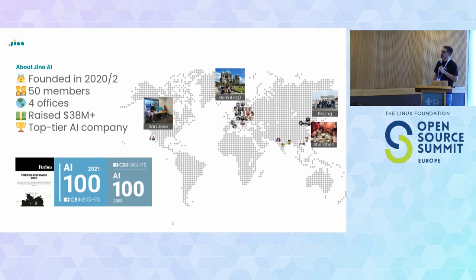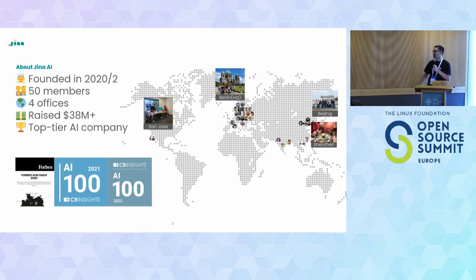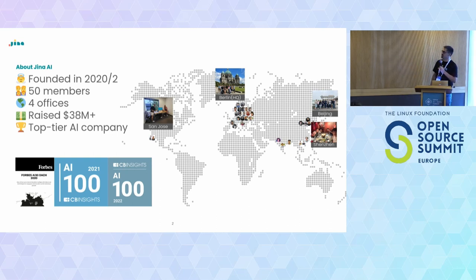We are an open source company that was founded in 2020, in the middle of the pandemic, and that influenced a lot the way we work. We are distributed around the globe, we have more than 50 team members right now, and we have four main offices: two in China, one in Berlin, and one new one in the US. We have raised 38 million dollars in funding and are considered a top tier AI company by some publications.